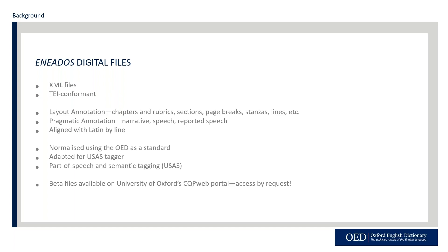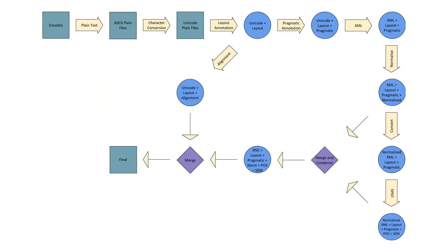As part of my research, I've been using corpus linguistic methods to analyze the mechanics of Douglas's translation, and a big part of this effort has been to make the Eniados into digital files. Here is the workflow for how these files were made. Broadly, I took David Coldwell's Scottish Text Society edition of the Eniados, available online through LION, and transformed it into Unicode files, which I used to initially explore the text and implement alignment between the Scottish translation and the Latin original. Along with alignment, I included layout annotation and pragmatic annotation, and then shifted the files to XML.